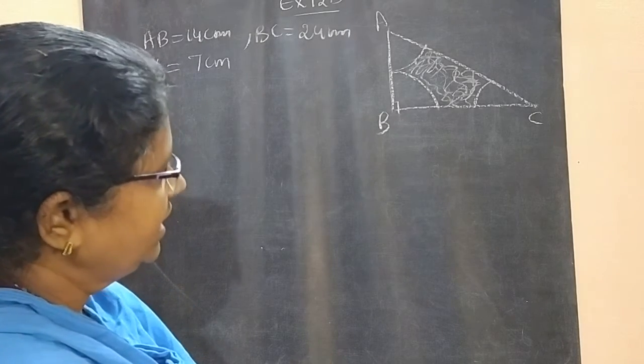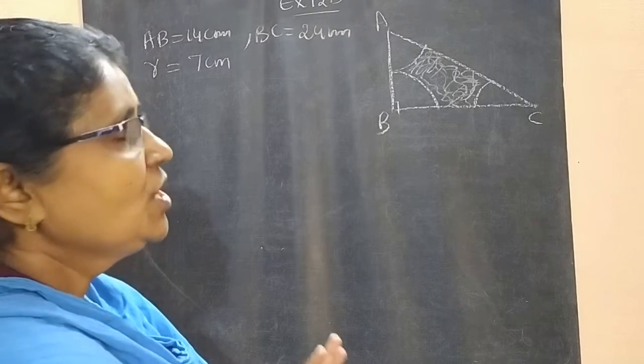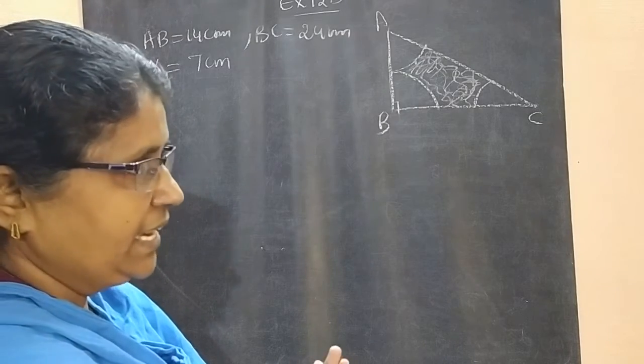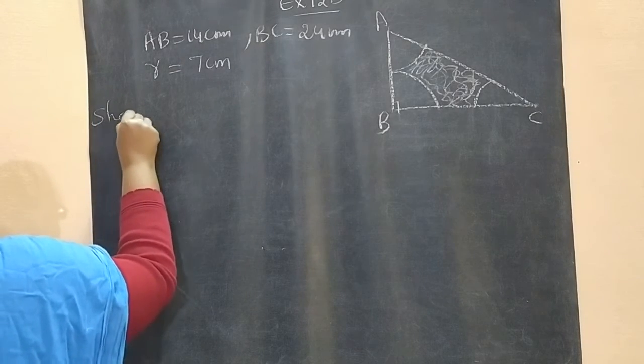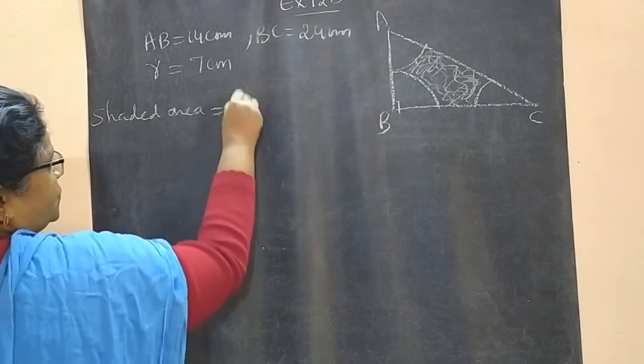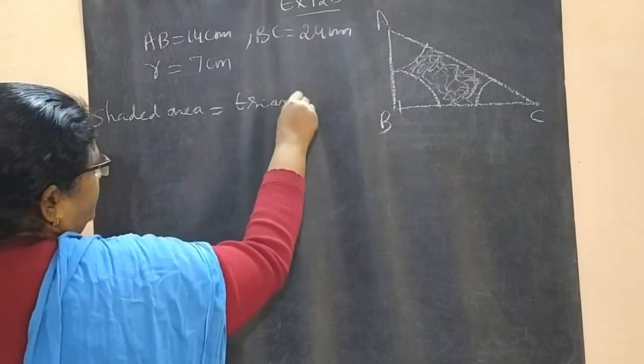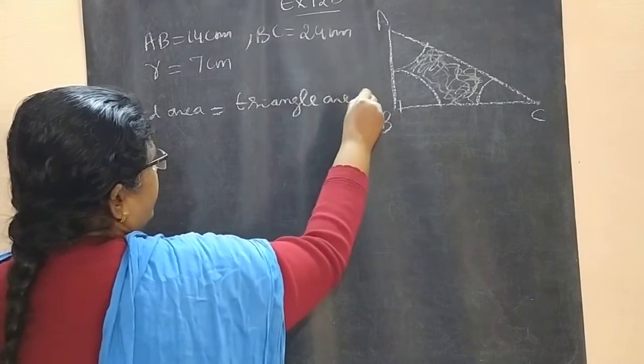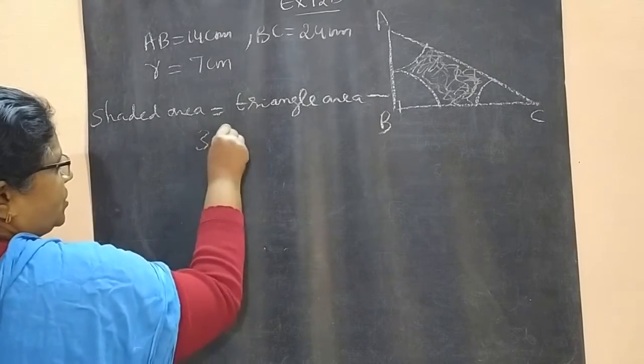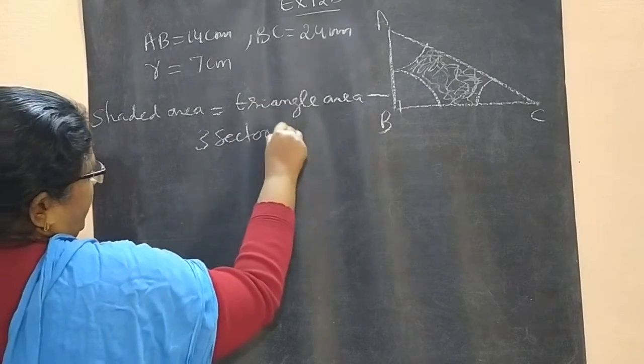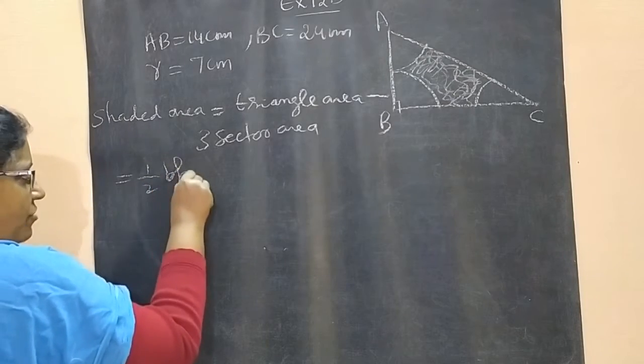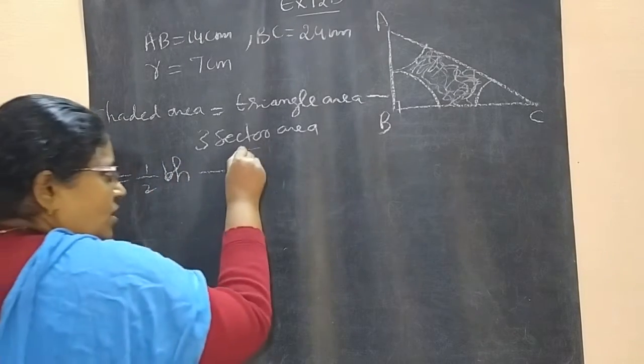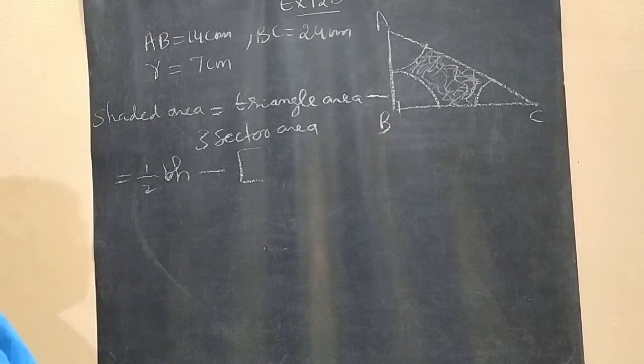What is triangle area? It is half base times height. Why? Because it is a right angle triangle. So we can write, shaded area is equal to triangle area minus 3 sector area. Triangle area half base times height minus 3 sectors you have to remove.